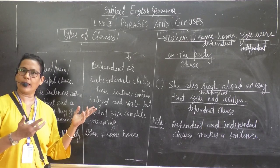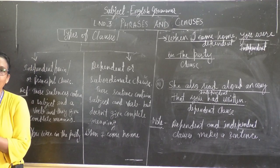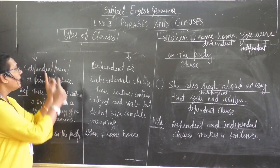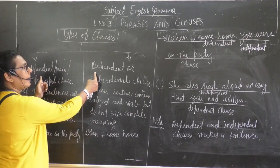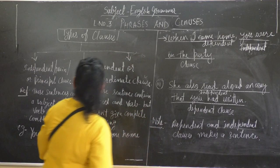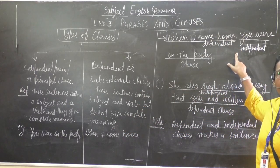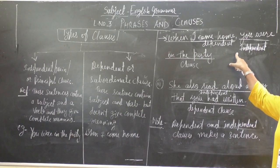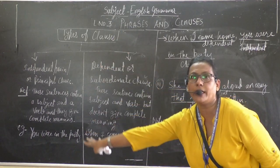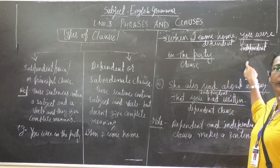When these two sentences — the dependent clause and the independent clause — are joined together: 'When I came home, you were in the party.' Are you getting the full meaning now? Yes! When we mix one dependent clause and one independent clause together, we get one full sentence.